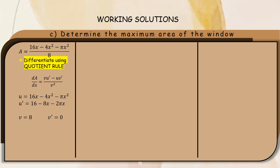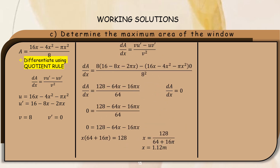We substitute the values of U, U', V, and V' into the quotient rule. After substituting, we get dA/dx = (128 minus 64x minus 16pi x) divided by 64.